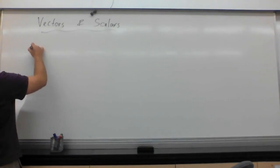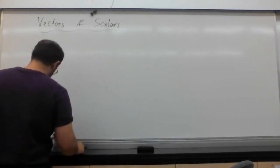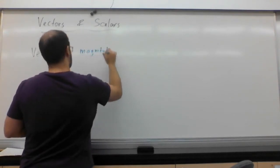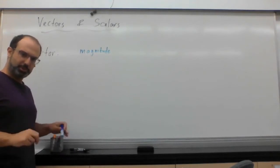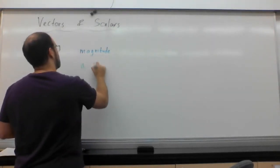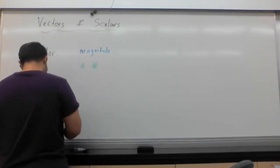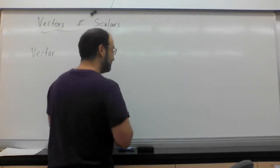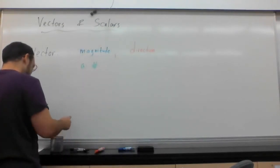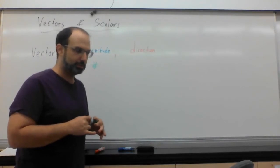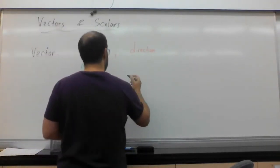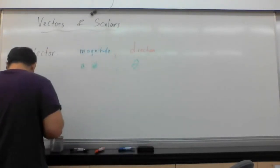So to review: the first one is a vector. A vector has something very important — we call it magnitude. Magnitude is another fancy-sounding word; it basically means a number. But there is more to a vector than just a magnitude — there is also a direction. A direction is often given in the form of an angle.